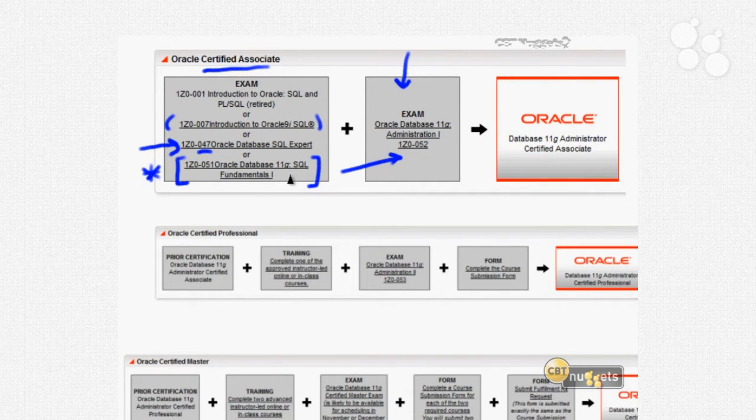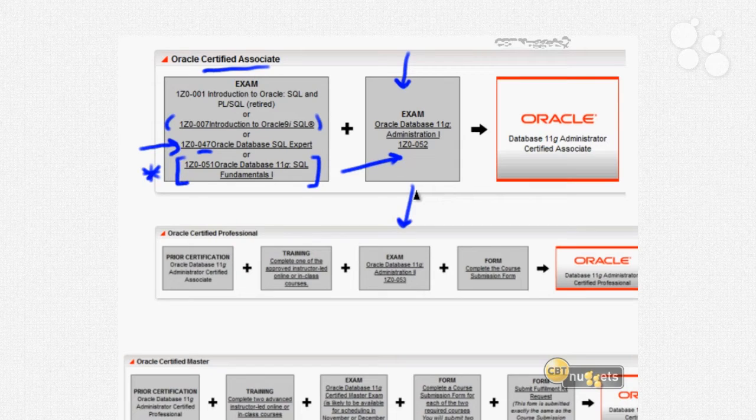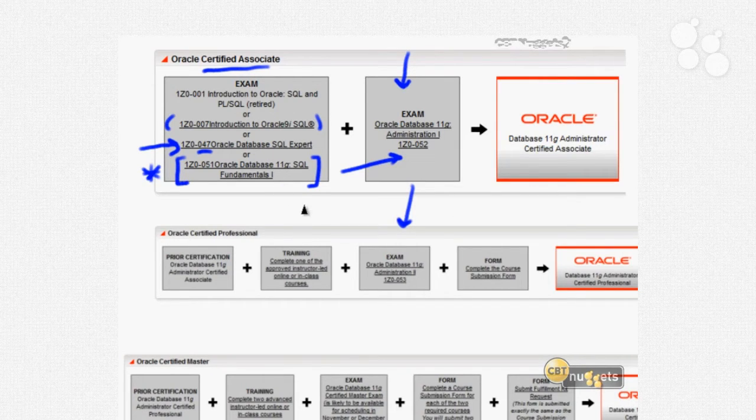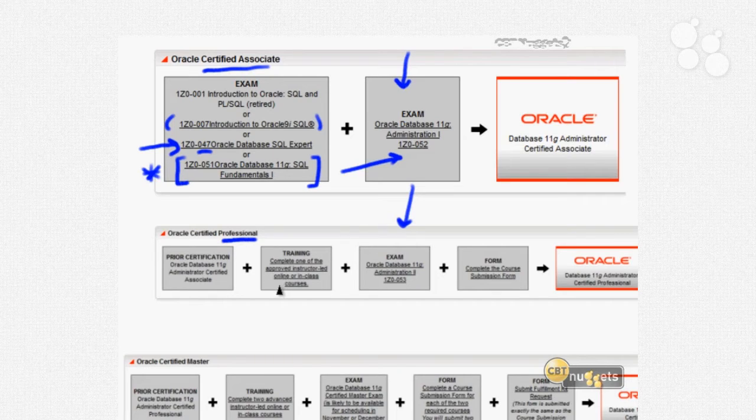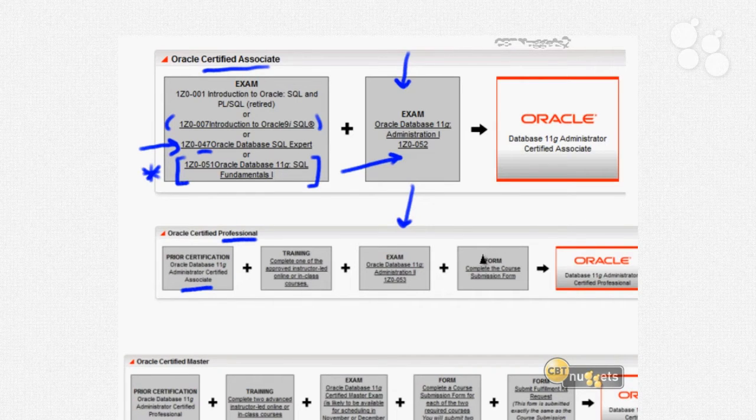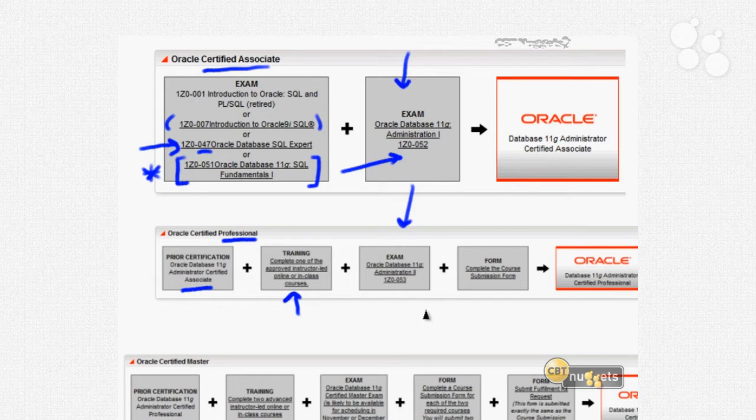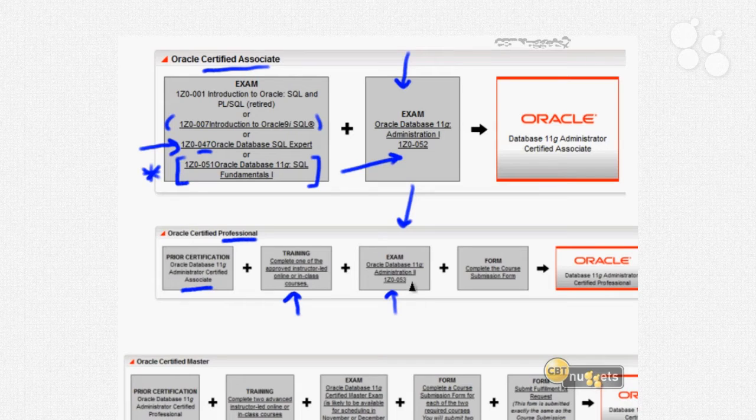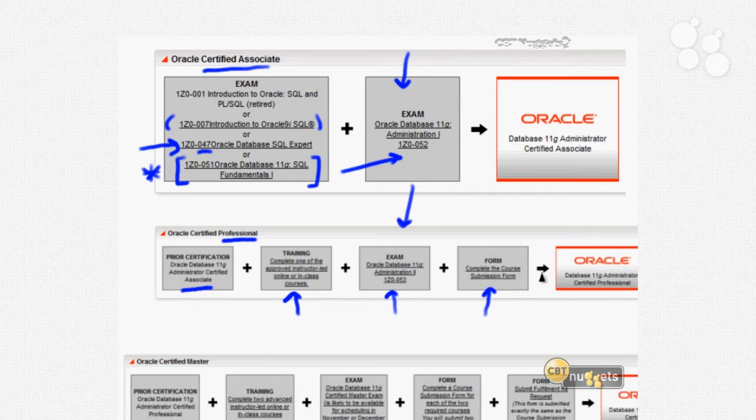Of these two exams, the SQL Fundamentals 1 is more convenient because you can actually take it from any computer in the world. You don't have to go to a testing center like you do for 052 and the rest of the exams. As we start moving our way up the ladder in Oracle Database certification, the next level is the professional level. And in order to even start this track, you have to be an Oracle Certified Associate. You have to learn to crawl before you can walk. Same thing goes with this. You have to be an OCA before you can be an OCP. Note also that there's a training requirement at the professional level. Besides passing a single exam, the 1Z0-053 DBA-2 test, you have to complete an Oracle-approved instructor-led or online training course and then submit your course completion form along with your past exam and you become an OCP.